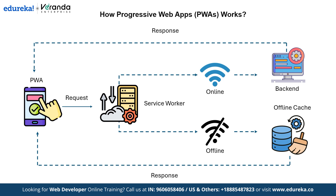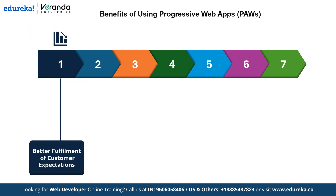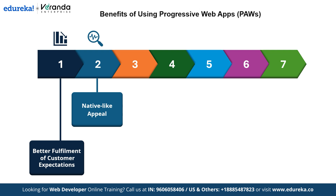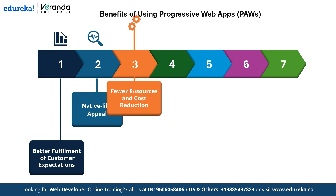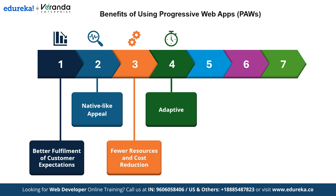Now that we have understood how progressive web apps work, let's look at some key benefits they bring to the table. First, progressive web apps are designed to meet user expectations effectively - they offer fast load times, smooth navigation and reliability, ensuring users have a great experience every time. They also bring a native-like appeal: progressive web apps look and feel just like mobile apps, offering features like push notifications and an app-like interface, giving users the convenience of an app without the need to download one. Another significant advantage is cost reduction - progressive web apps save resources by eliminating the need to develop separate apps for different platforms. One app works across all devices, saving time and money. Progressive web apps are also highly adaptive, seamlessly adjusting to different screen sizes and devices, ensuring accessibility for everyone whether on smartphone, tablet or desktop.